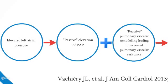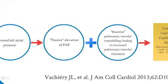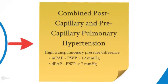In the second case, we also see an elevation of left atrial pressure leading to a passive elevation of pulmonary artery pressure, but there is also a reactive component with reactive pulmonary vascular remodelling, which leads to an increase in pulmonary vascular resistance. This is combined postcapillary and precapillary pulmonary hypertension, and here we have a high transpulmonary pressure difference, where the mean pulmonary artery pressure minus the wedge pressure is more than 12 mmHg, or the diastolic pulmonary artery pressure minus the wedge pressure is greater than 7 mmHg.